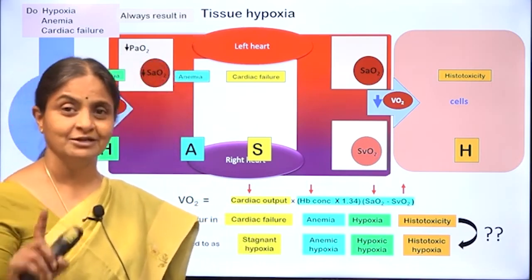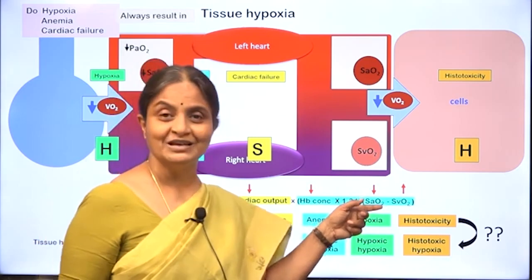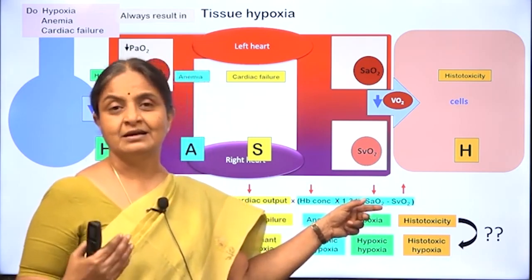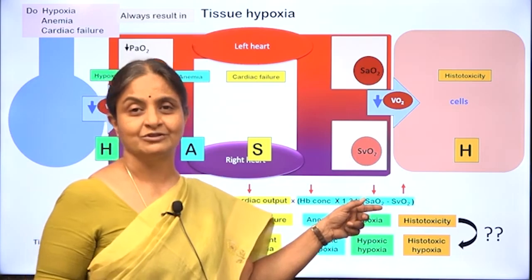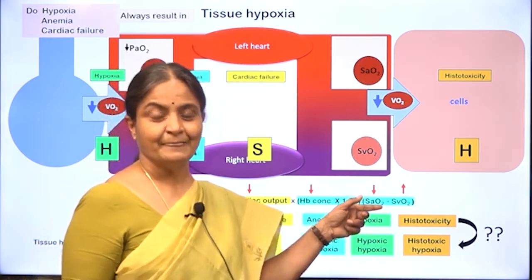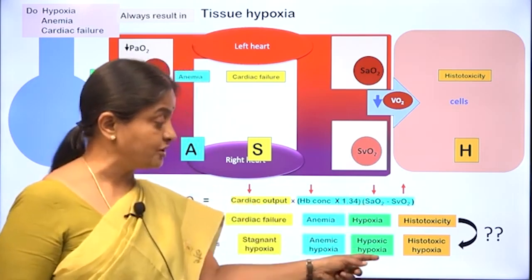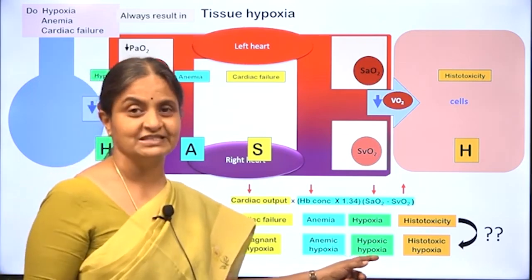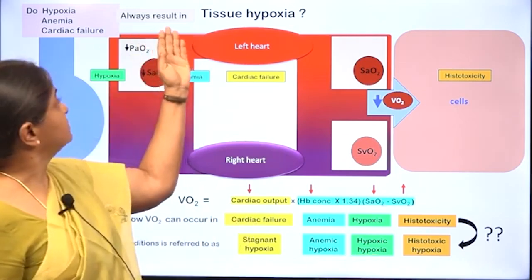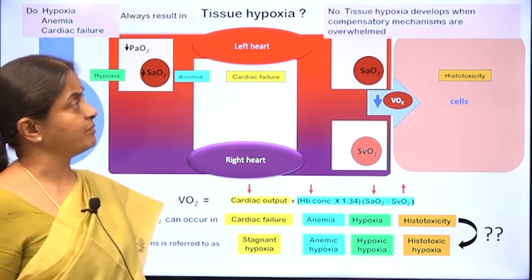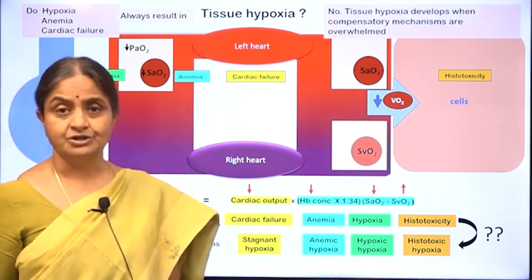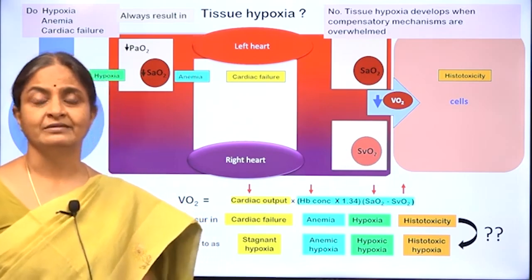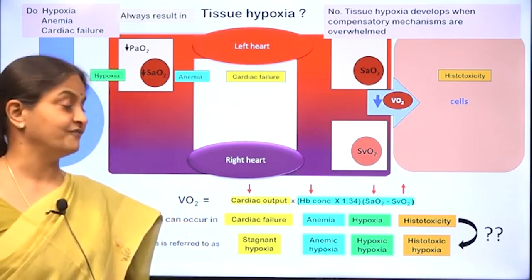When I say hypoxia alone, I am referring to hypoxia in blood — a reduced arterial oxygen saturation. If that leads to tissue hypoxia, I call it hypoxic hypoxia. Tissue hypoxia develops only when the compensatory mechanisms have failed.